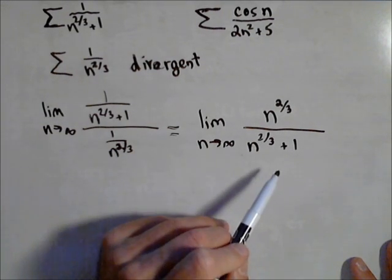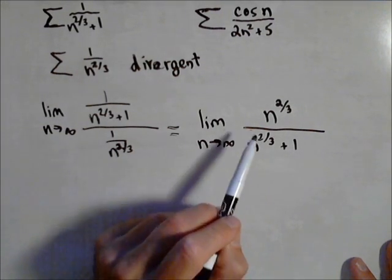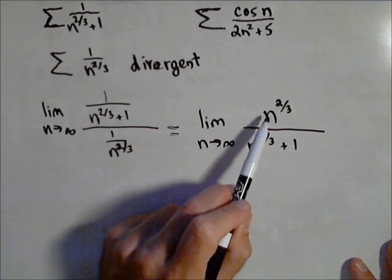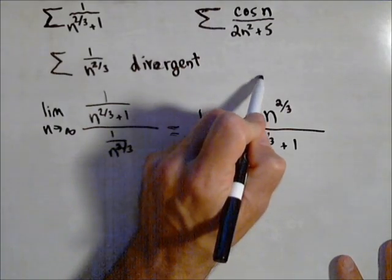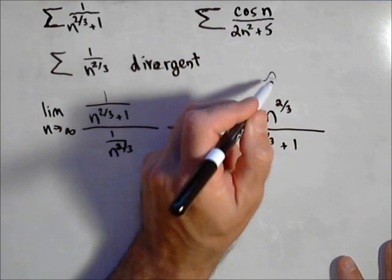But I want to remind you of another method used for calculating limits. As n goes to infinity, top goes to infinity, bottom goes to infinity. I have an infinity over infinity case.